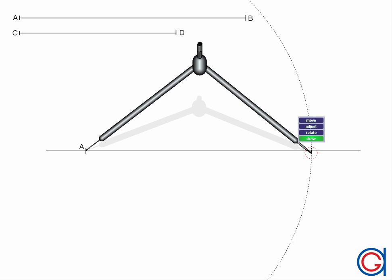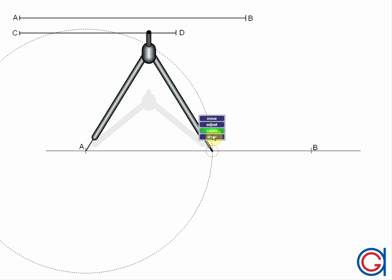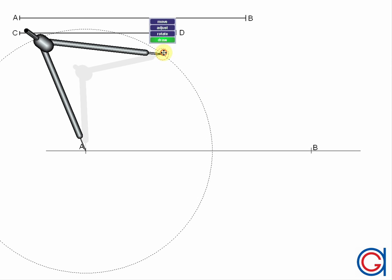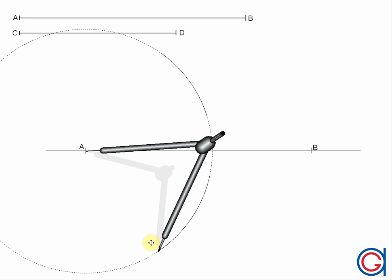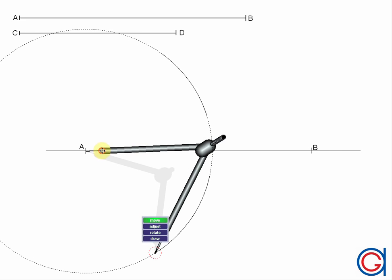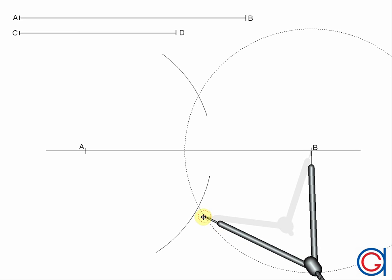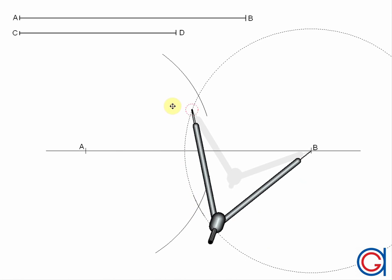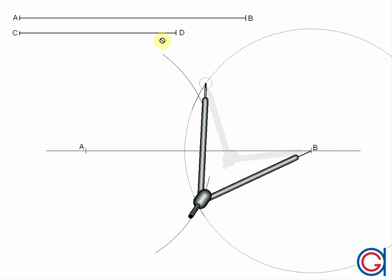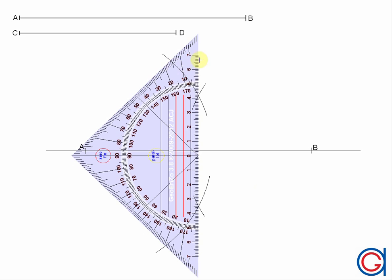Now that we have the horizontal axis AB, we are going to work out its perpendicular bisector, because this is where our second smaller axis CD will be located. To draw this perpendicular bisector, we draw two arcs centered on both ends of axis AB. These arcs have the same radius, with the only condition being that the radius must be longer than half the length of AB. The arcs intersect at two points, which we join to obtain our perpendicular bisector, which cuts axis AB at a point we will call zero.